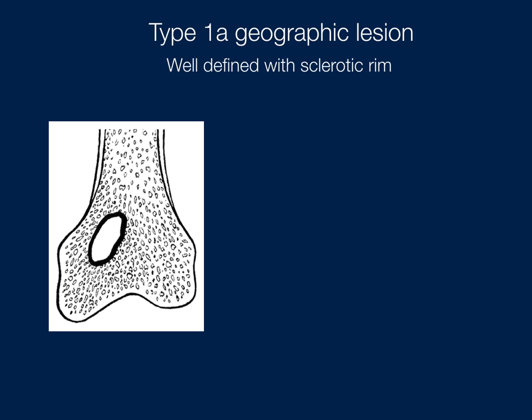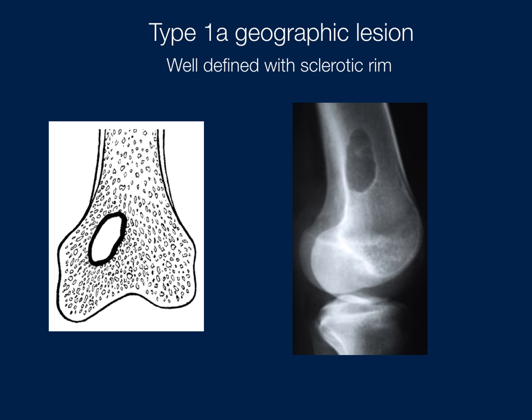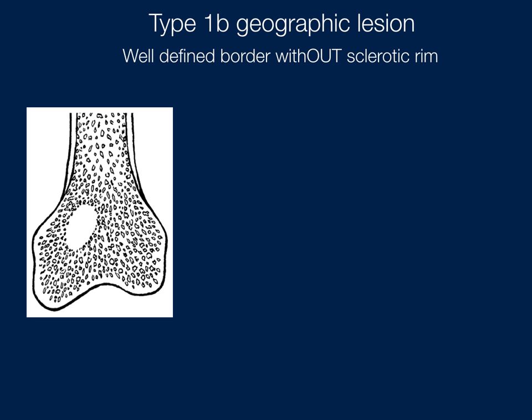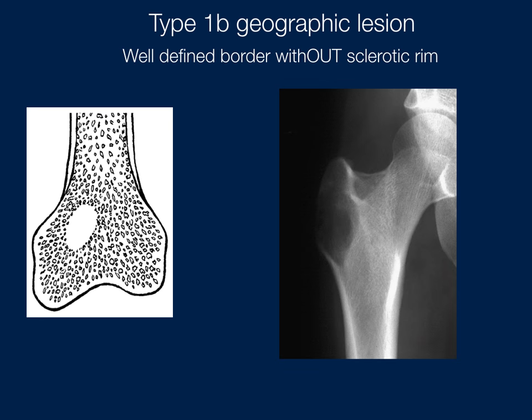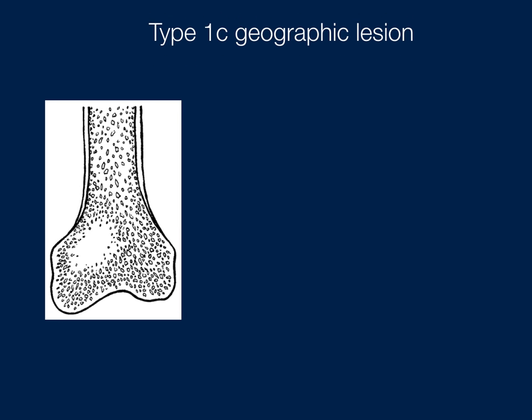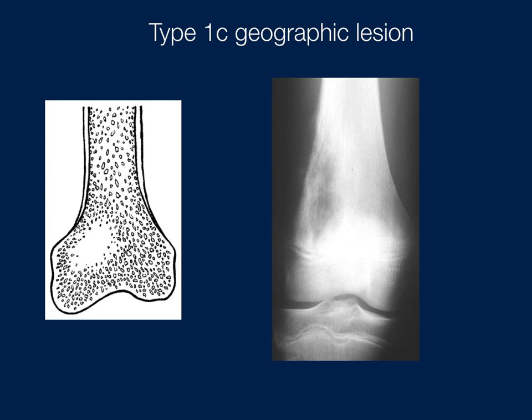The type 1A geographic lesion is well-defined with a sclerotic rim. The 1B is geographic and well-defined but without the sclerotic rim. Type 1C is a geographic lesion that is not well-defined.